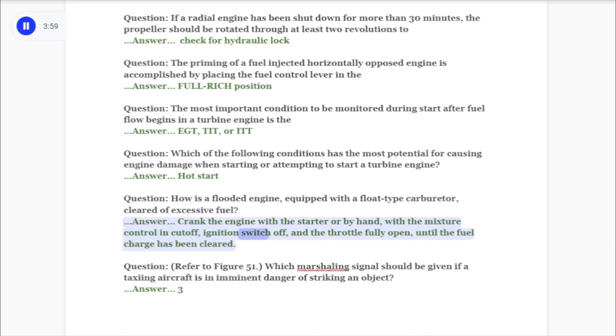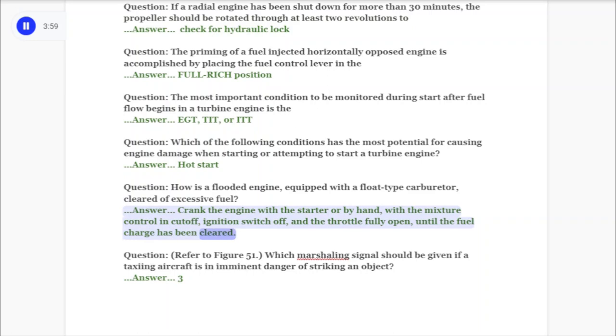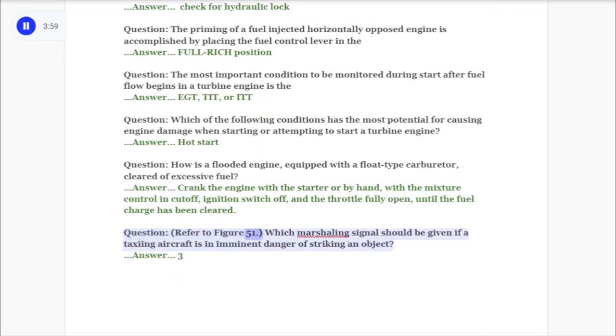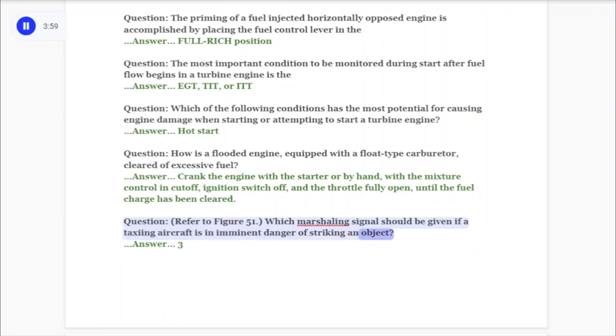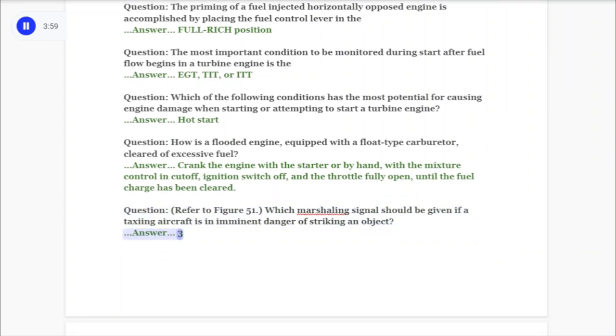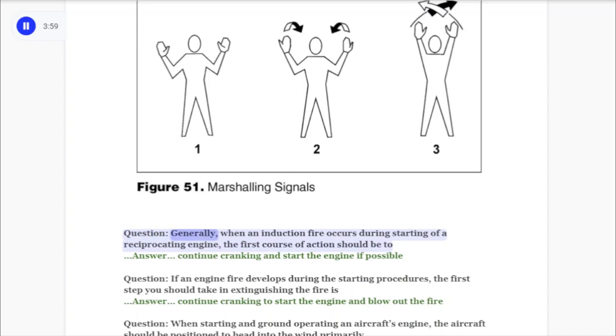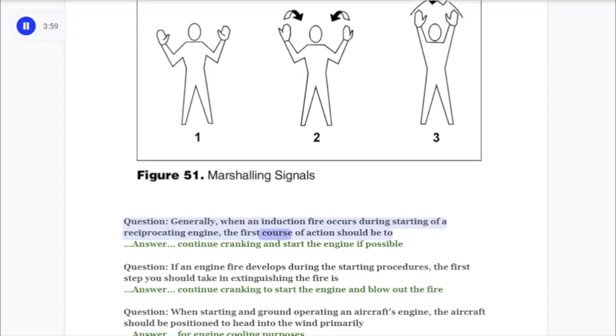Question: Refer to Figure 51. Which marshalling signal should be given if a taxiing aircraft is in imminent danger of striking an object? Answer: Three. Question: Generally, when an induction fire occurs during starting of a reciprocating engine, the first course of action should be? Answer: Continue cranking and start the engine if possible.